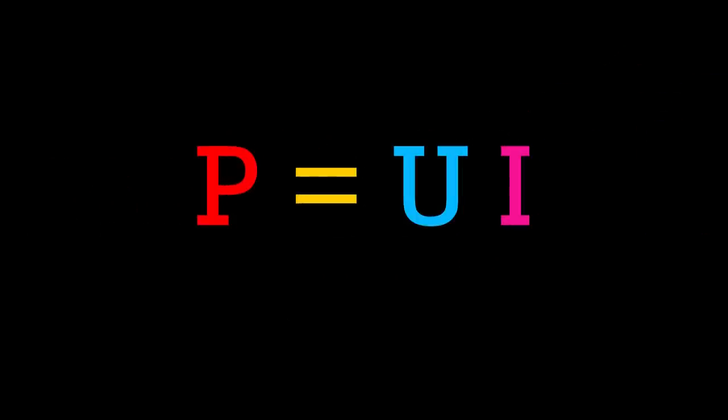The basic formula for calculating between watts and amps is: P equals U times I. In which P stands for power, U stands for voltage, and I stands for current.